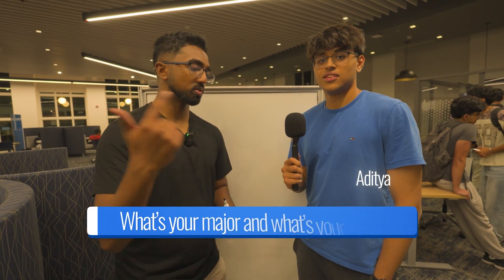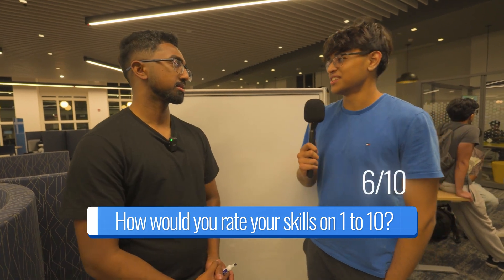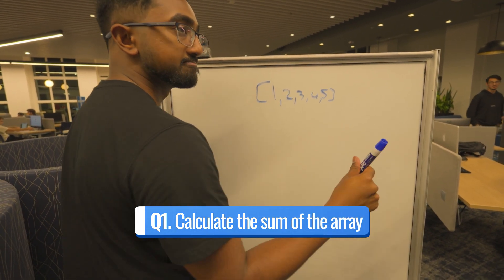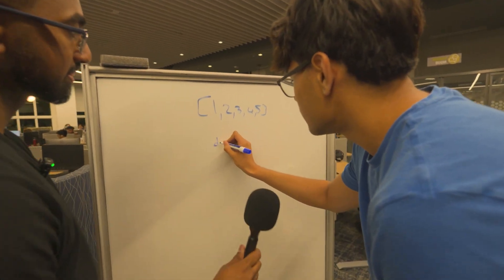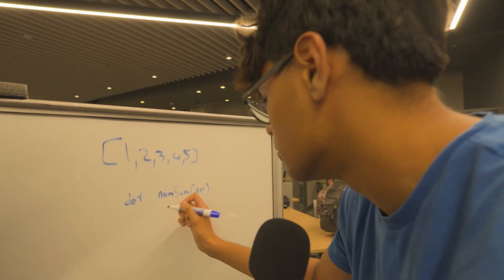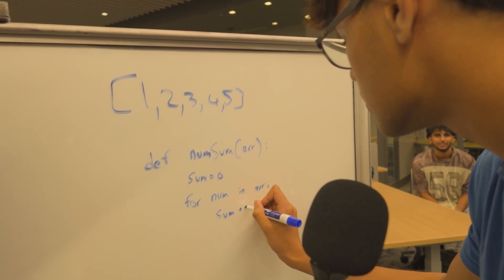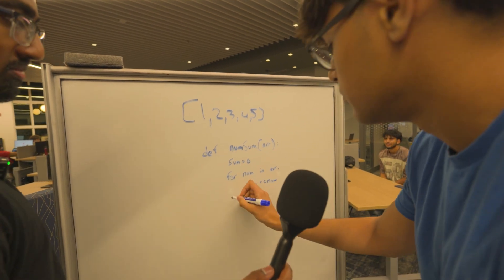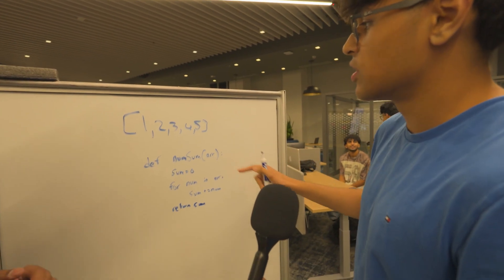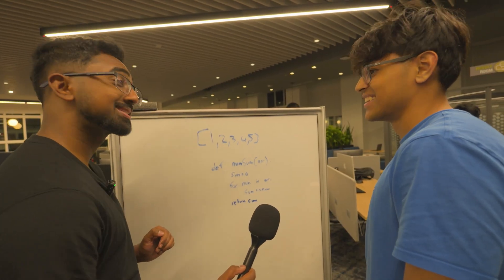Who am I here with? Aditya. What's your major and what year are you? I'm a junior studying computer science and math. If you could rate your coding knowledge on a scale of one to ten, where would it be? I'd rate it a six. So I have an array — I want you to write out a function that iterates through the array and returns the sum. So I'll define a function. I'm going to code in Python. I'll have a tracker: sum equals zero. For num in array, sum plus equals num — adding each number to the sum. Then simply return sum. That should return the sum of all numbers in the array.